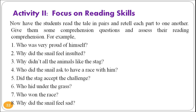Activity two focuses on the reading skill. Have students read the tale in pairs and retell each part to one another. Give them comprehension questions and assess their reading comprehension. For example: Who was very proud of himself? Why did the snail feel insulted? Why didn't all the animals like the stag? Who did the snail ask to have a race with? Did the stag accept the challenge? Who hid under the grass? Who won the race? Why did the snail feel sad? And so on.